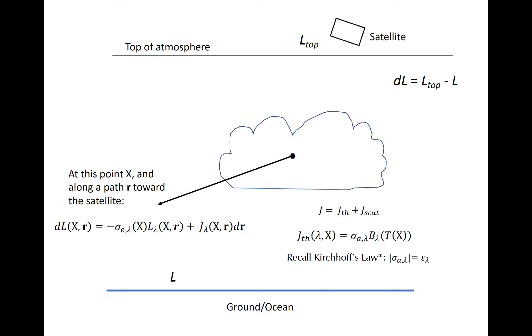The thermal emissions are simply described as sigma A multiplied by the Planck radiance at point X, which is defined by the temperature at X. Note that Kirchhoff's law states that an object in thermodynamic equilibrium is an equally good emitter and absorber at the same wavelength.